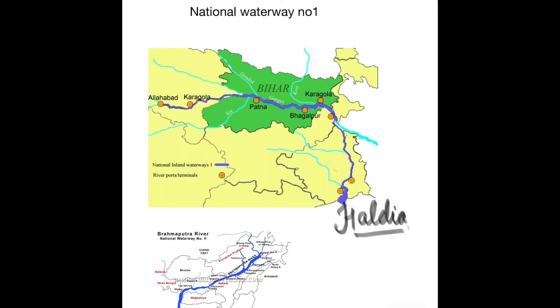The two great rivers of India — the Ganga and the Brahmaputra — and their tributaries carry the largest part of river traffic in India. Let's study about the main national waterways in India.